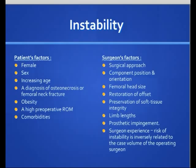Surgeon factors include the head size of the femur, the restoration of the offset, preservation of soft tissue integrity, limb lengths, prosthesis impingement, and one of the most important — surgeon experience. The risk of instability is inversely related to the case volume of the operating surgeon. So the more you operate, the less likely you're going to have dislocation.